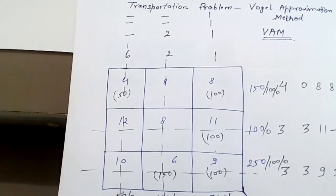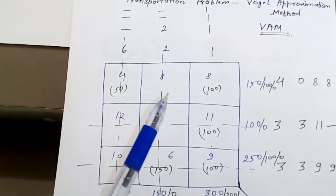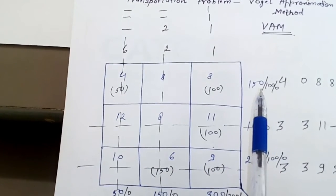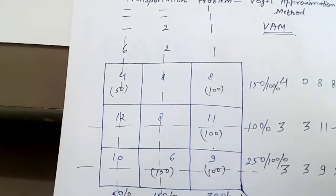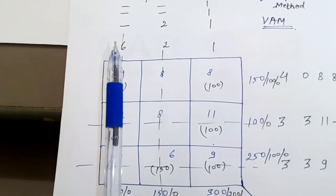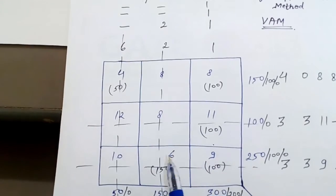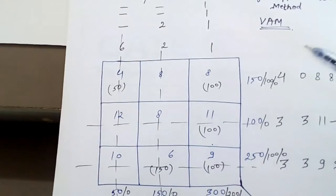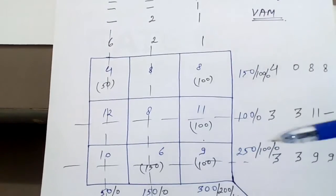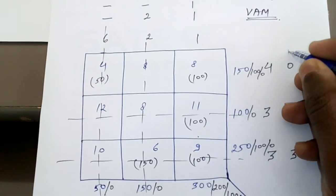In the next step, the first column is gone and only six elements remain. Find the penalty again. The row penalties are: 8 minus 8 = 0, 11 minus 8 = 3, 9 minus 6 = 3. The column penalties are: dash (cancelled column), 2, and 1. So the penalties are 0, 3, 3 for rows and dash, 2, 1 for columns.